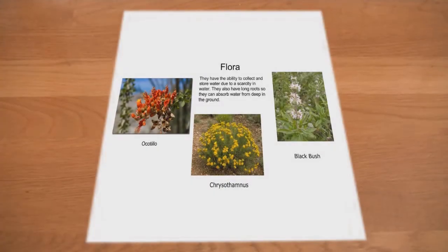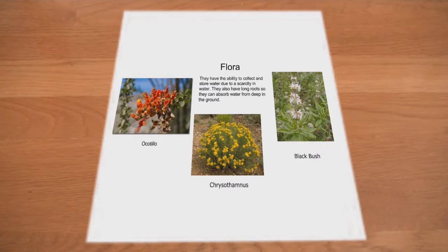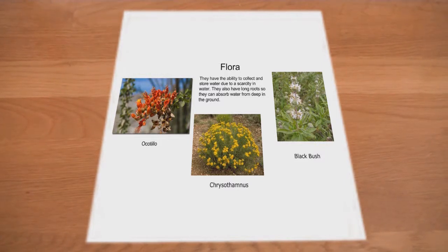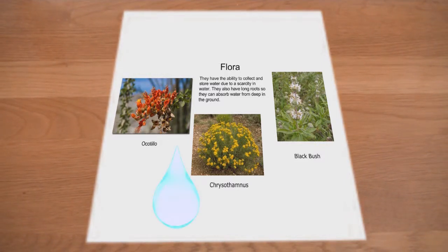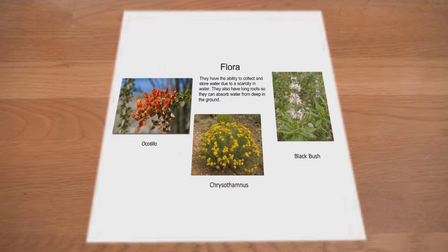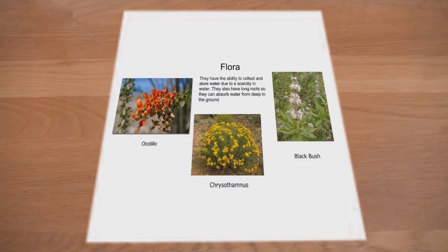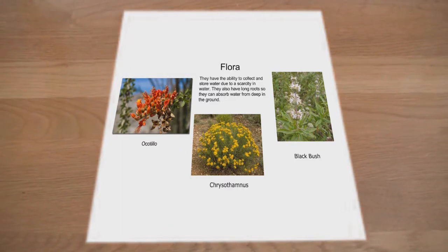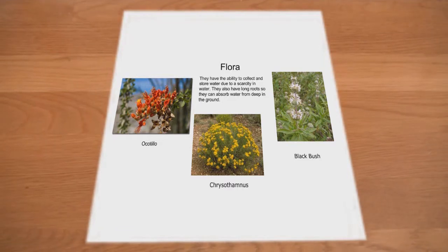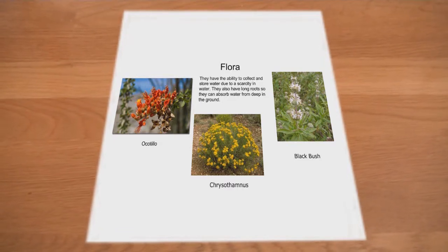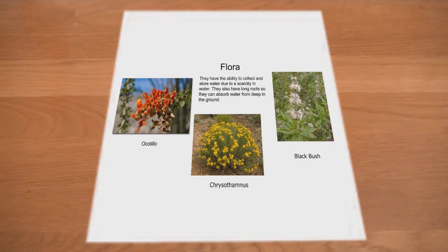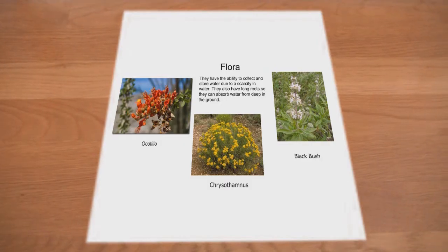In the desert biome, the flora includes the Actilio and Blackbush plants. With a scarcity of water, these plants have formed the ability to absorb and store water. In fact, they typically have long roots to enable them to collect water from deep within the ground and hold firmly to the soil.